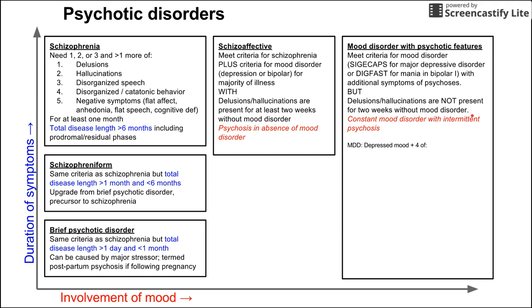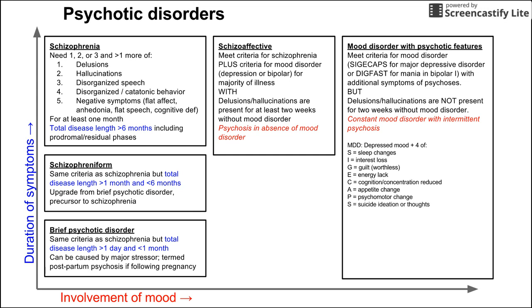For major depressive disorder, you need a depressed mood plus four of the SIG E CAPS criteria: sleep changes, interest loss, guilt, energy lacking, cognition or concentration reduction, appetite changes, psychomotor changes (agitation or retardation), and suicidal ideation, thoughts, or attempts. If you also have concurrent symptoms of psychosis, you could have mood disorder with psychotic features.